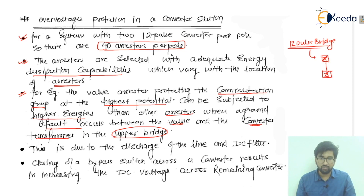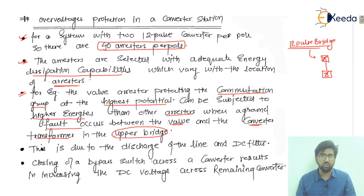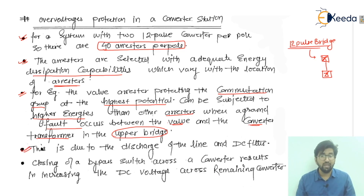When the ground fault occurs, there are chances of ground faults occurring which are not easily detectable. The fault occurs between the wall and the converter transformer in the upper bridge. This is due to the discharge of the line.